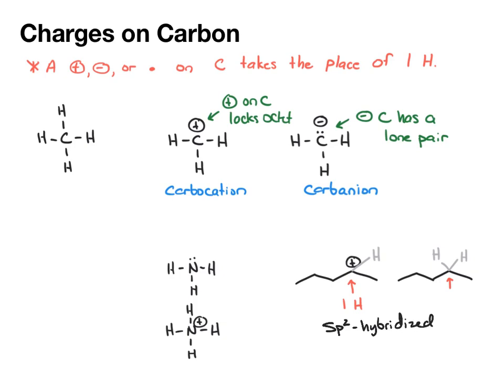On the flip side, if you have a carbanion, so you have this lone pair and a negative charge, there's still one hydrogen here. That carbanion carbon has four groups. We have the bond here, the bond here, the bond to the hydrogen, and the lone pair. That carbon is sp3 hybridized.